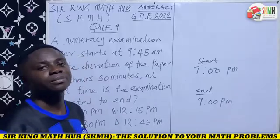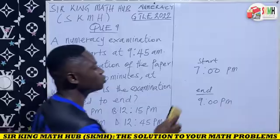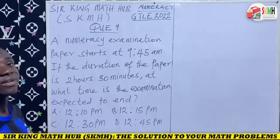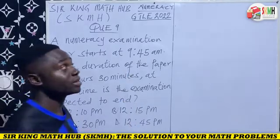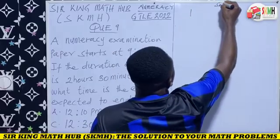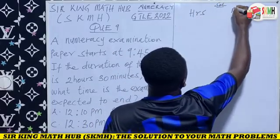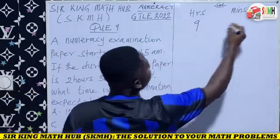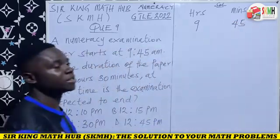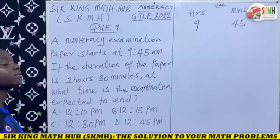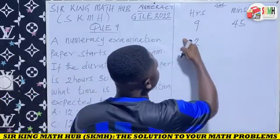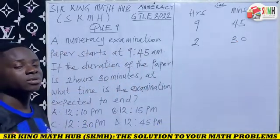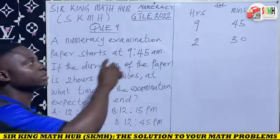That is the whole concept: when you add the duration to the start time, that gives you the end time of the event. Using this same idea, let's come back to this particular question. We know the start time is 9:45, so I'm going to split the time into hours and minutes. The duration is 2 hours and 30 minutes, and we have to add the duration to the start time to get the end time.